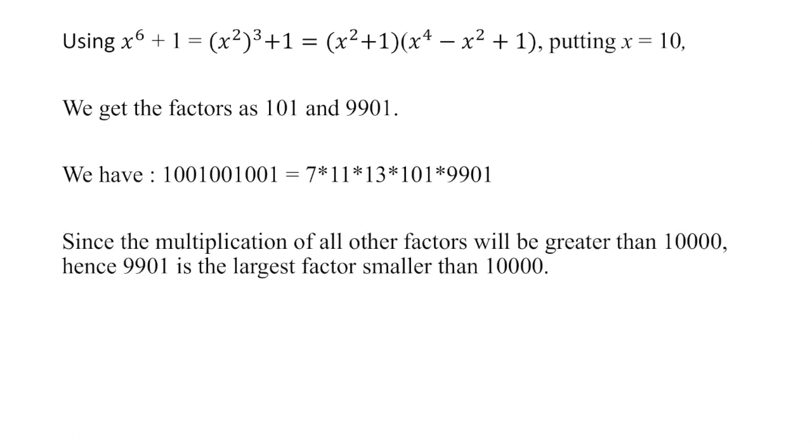So the largest factor will be 9901 only because it is really close to 10,000. No other factor can be more closer to 10,000 because if you divide the number by this number, you are going to get a number which is greater than 10,000 for sure. So this is the factor which is being asked in the question.